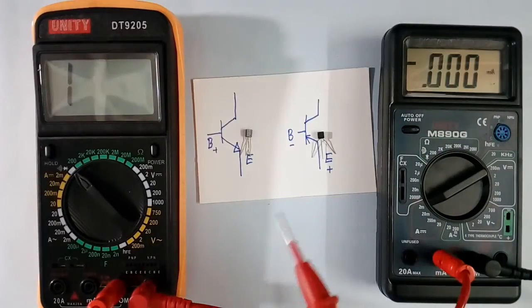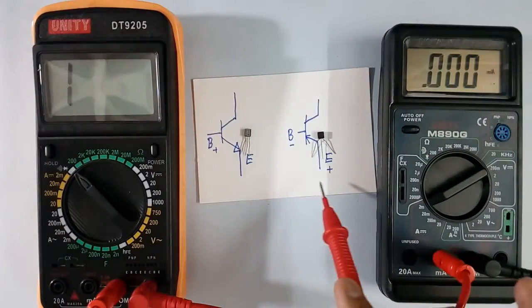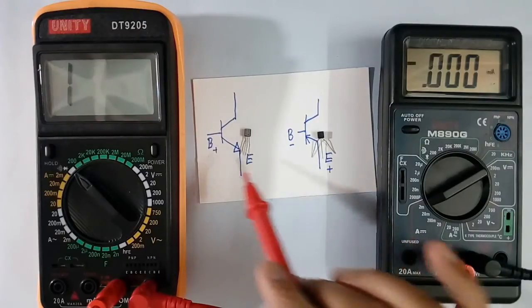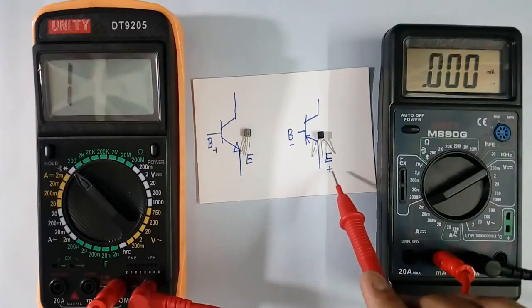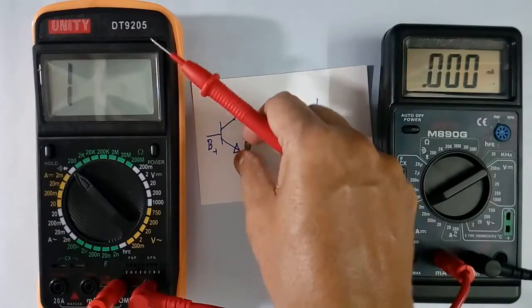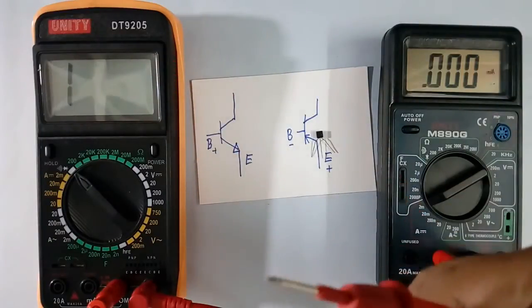I have 2 transistors, 1 NPN, 1 PNP. In NPN base is positive. In PNP emitter is positive. So first I will take NPN and connect base to positive.